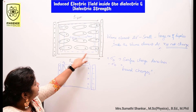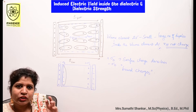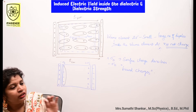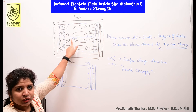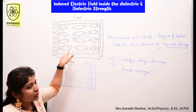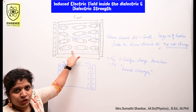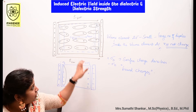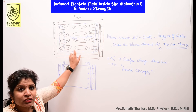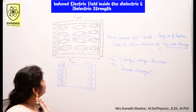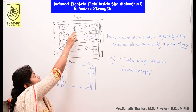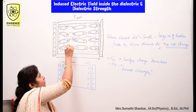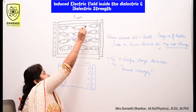Consider one volume element delta V — the dotted region shown. This is our volume element delta V; it is very small. Within this volume it has a large number of dipoles. The net charge is zero inside the volume element, because each positive charge and negative charge neutralize each other.